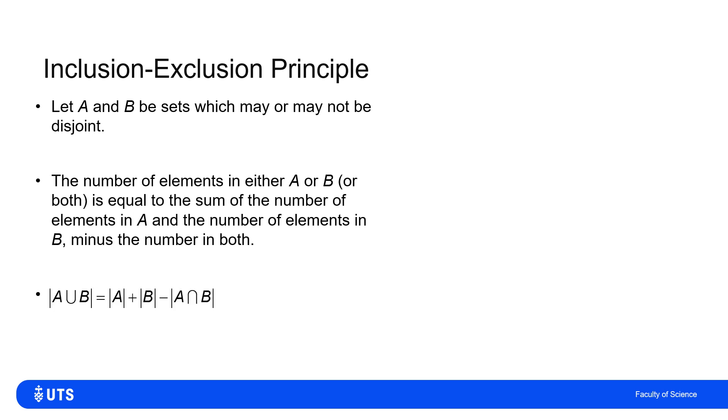So in terms of the size of sets, the cardinality of A union B, the number in the sets A or B, is the number in set A plus the number in set B. But the number of elements which are in both A and B have been double counted, so I need to exclude the number of elements in the set A intersection B.